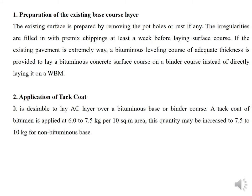The existing surface is prepared by removing the potholes or rust if any. The irregularities are filled with premix chippings at least one week before laying the surface course. This is the first step: preparation of the existing base course. Whatever obstructing materials are present — trees, potholes, rust areas — you have to remove them using equipment, and any uneven areas must be filled at least one week before.